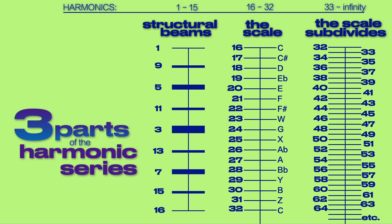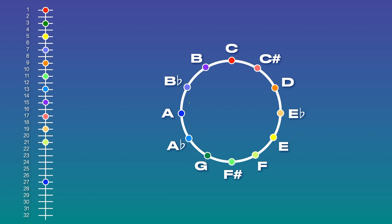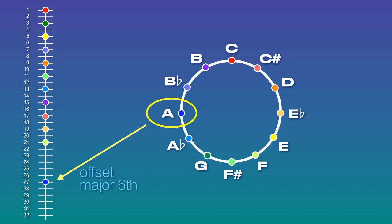If we look at the structure of the harmonic series, we see that it contains three parts. Part 1, between harmonics 1 and 15, houses the structural beams of the scale to come. Part 2 is the full chromatic scale between harmonic 16 and 32. Part 3 is the rest of the series that continues to infinitely subdivide from harmonic 33 onward. All 12 notes of the traditional chromatic scale are generated by the scale's end at harmonic 32, and the note of A has a special position in this generation that culminates a process of tripling the first five harmonics.